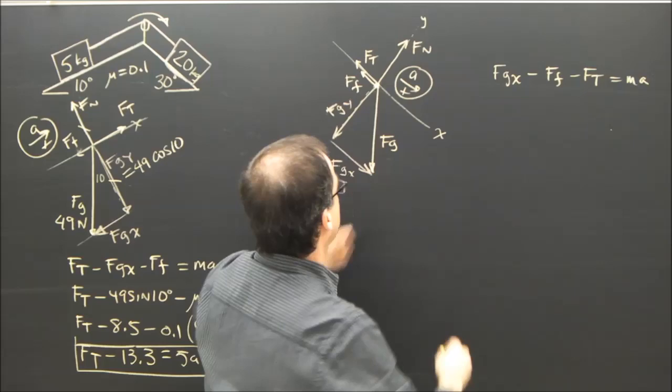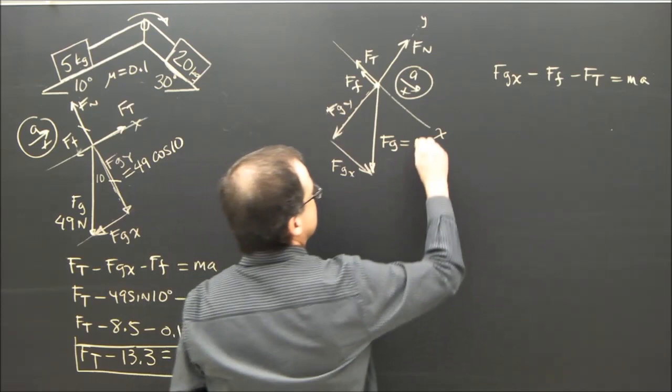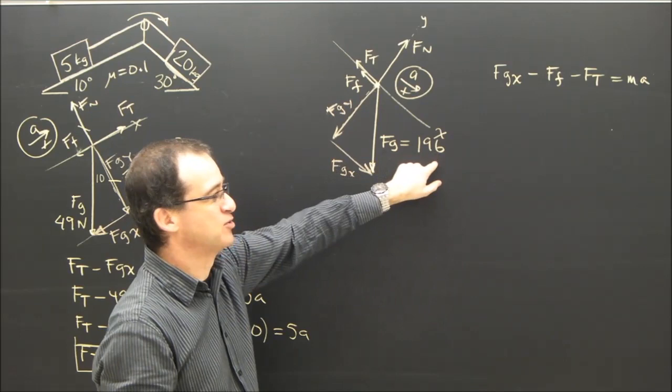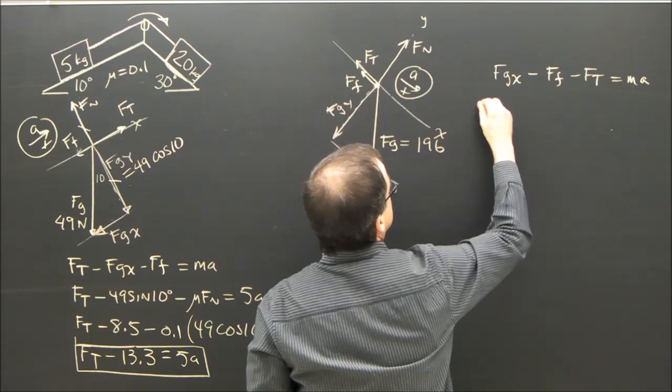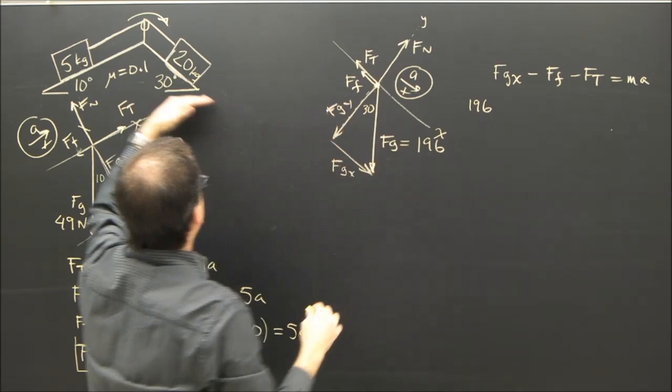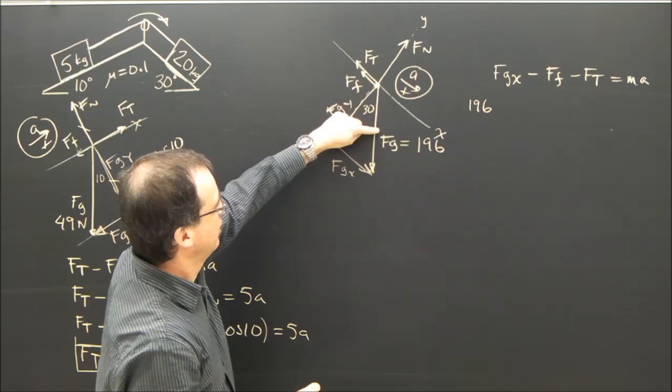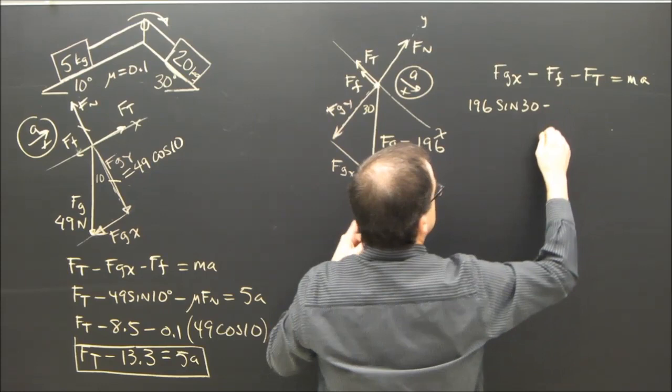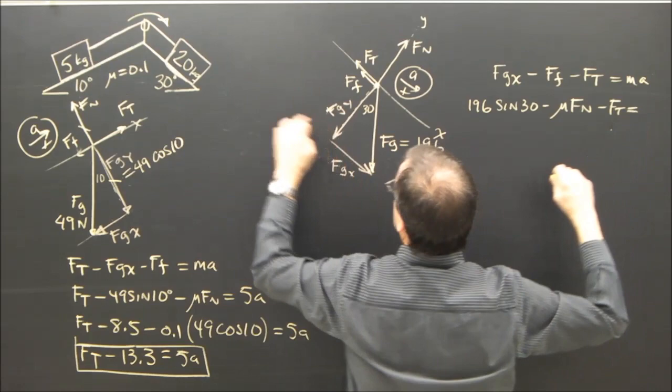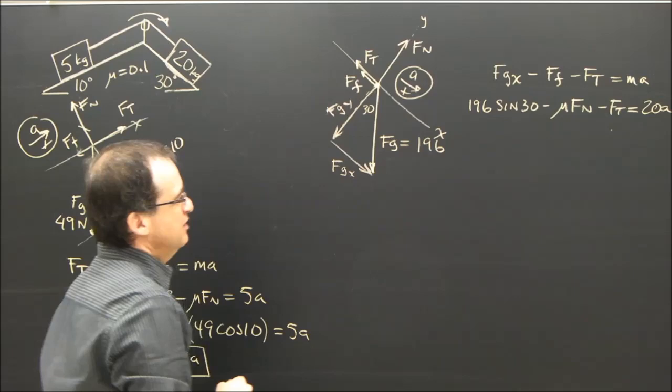Let's put in some numbers. Fg, x. Well, what is fg? This mass is 20. So this is 196, because fg is mg, 20 times 9.8 is 196. So it's 196, and then, so I've got fg, x is 196. This angle here is 30, because the angle of the ramp is the inside angle to the y direction of fg. So this angle, this angle is the same. So I want fg, x. It's going to be 196 times the sine of 30, minus force of friction, which is mu fn, minus ft equals, and I've got 20a.